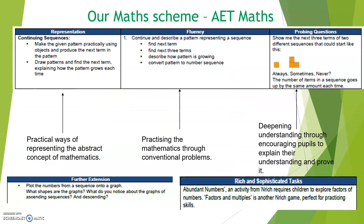A quick talk about our AET scheme — you may have seen this in previous meetings. The way it works is it goes through representation, fluency, probing questions, further extension, and sophisticated tasks. We start with representation, where we get physical resources out — as you saw earlier, using place value counters for adding and subtracting. At this stage there'll be a lot of teacher talking and children working in pairs to create different things.